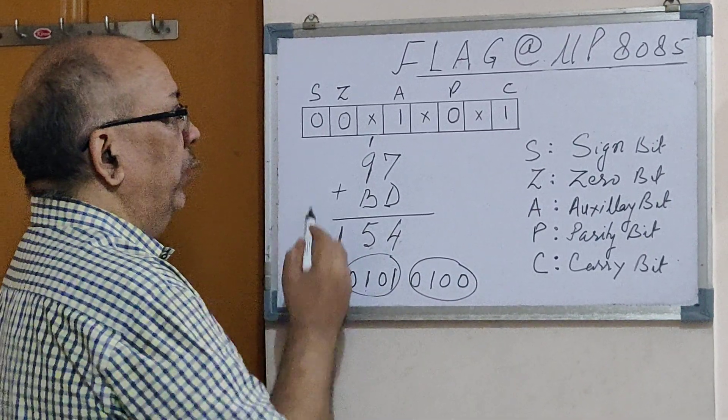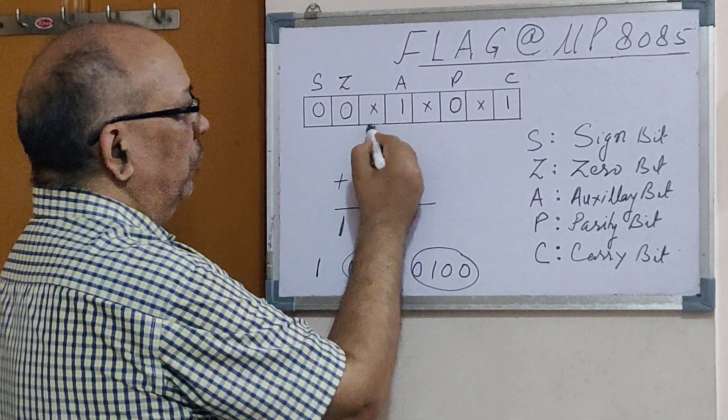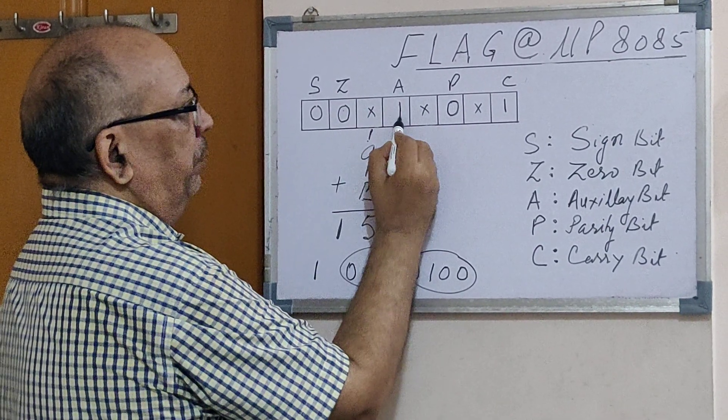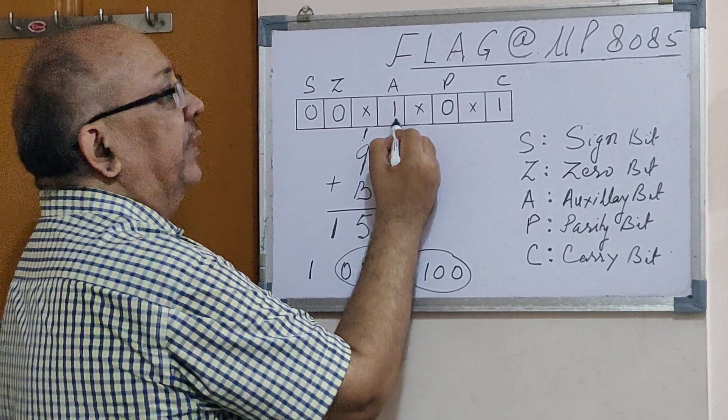Now, if you go to the flag register, we see that there is a carry from 7 to 9. This is called auxiliary carry. Wherever this carry is generated, this particular bit will set. Had there not been any auxiliary carry, this would be reset.